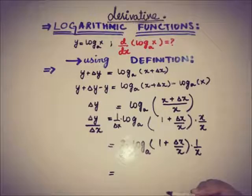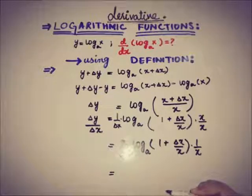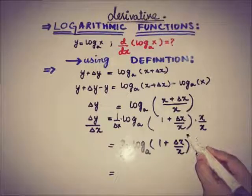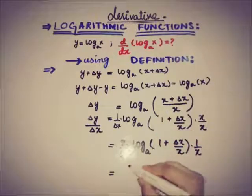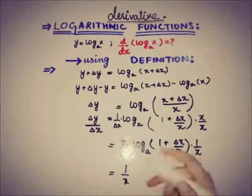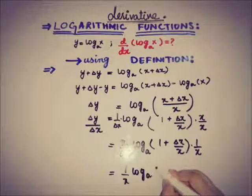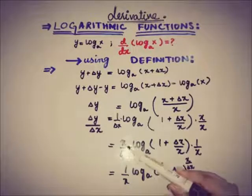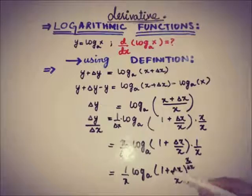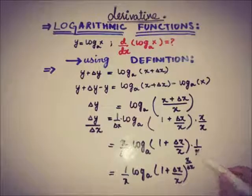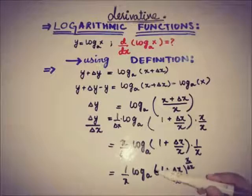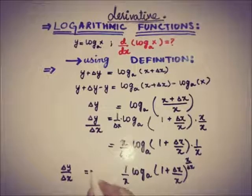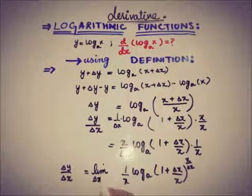By using laws of logarithmic functions, this x by delta x will go to the power of this function, which means that 1 by x, and this value x by delta x comes as the power of 1 plus delta x by x, and 1 by x is here. So we will apply limit that delta x approaches to 0, applying limit on both sides, delta x approaches to 0.